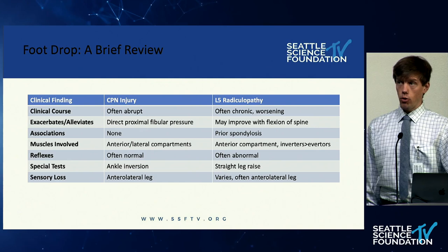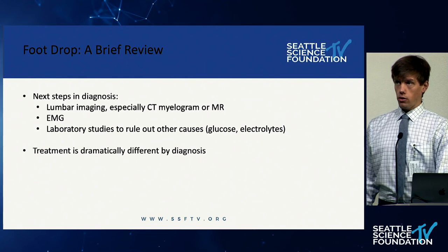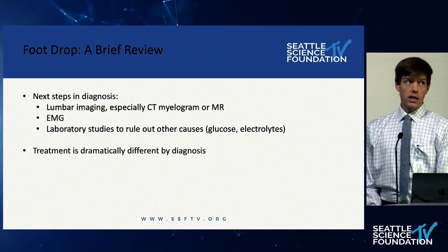Another important takeaway is that sensory loss distribution is often not particularly helpful because there is some overlap of the dermatomes, and there may be multi-level disease in the case of radiculopathy, so that is sometimes not a reliable indicator. The next step in diagnosis after a thorough clinical exam is lumbar imaging — CT myelogram or MRI. EMG testing can be very revealing, as it was in the first case.